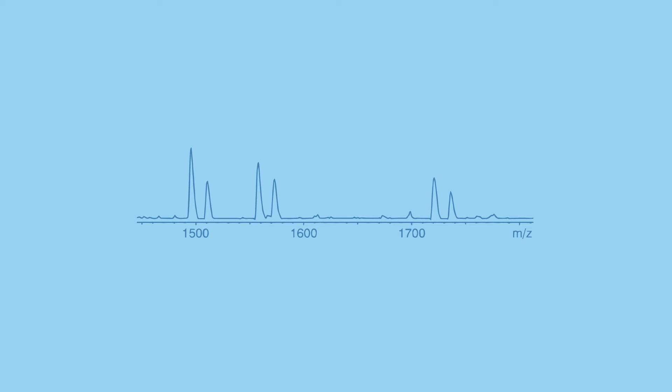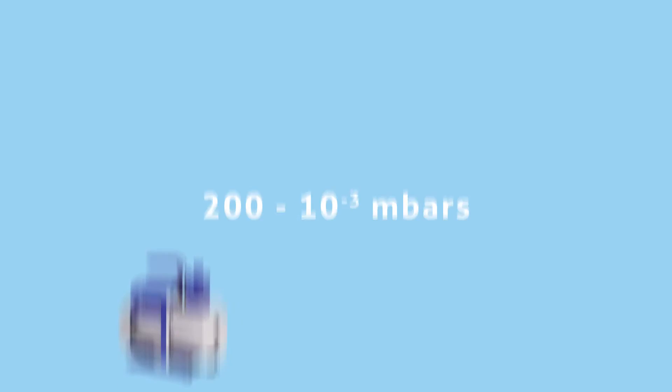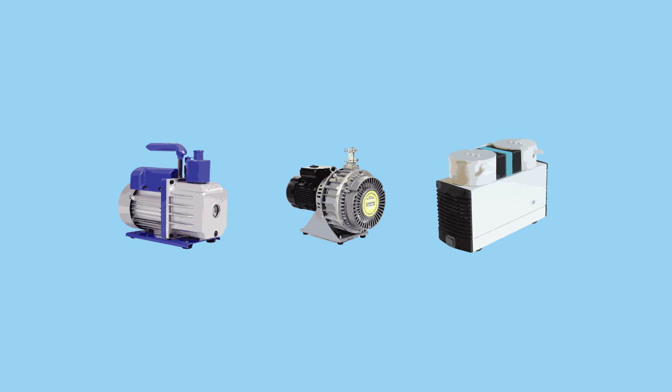A great number of applications use standard vacuum pressures in the range from roughly 200 millibars to 10 to the minus 3 millibar. Rotary vane, dry scroll and diaphragm pumps all provide vacuum pressures in this range.